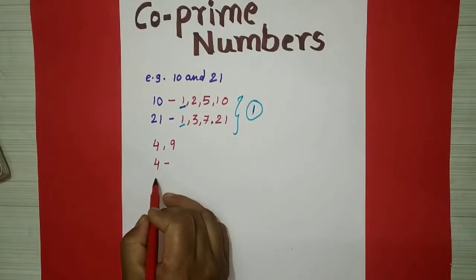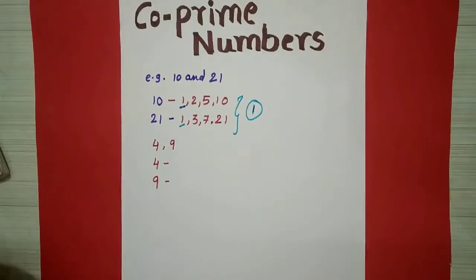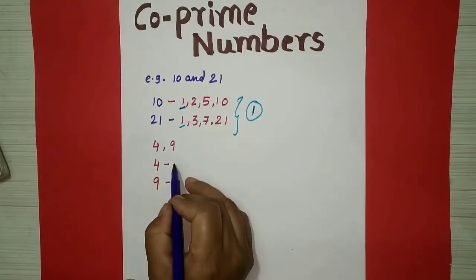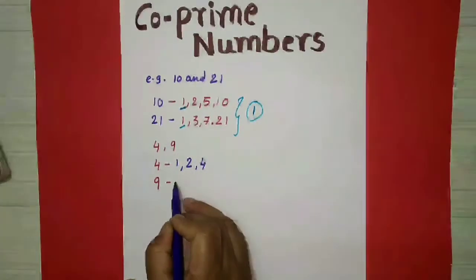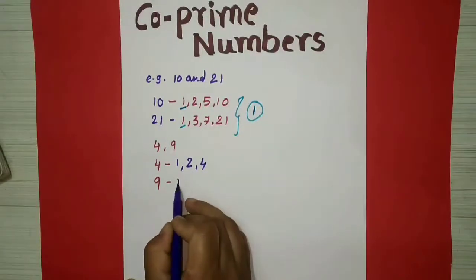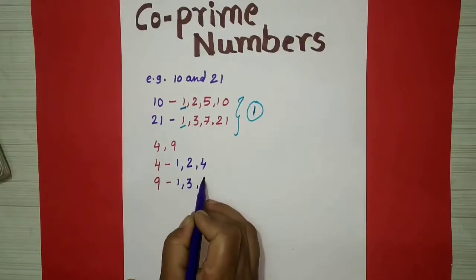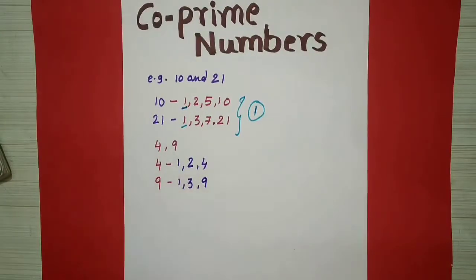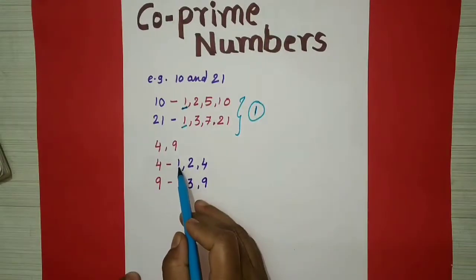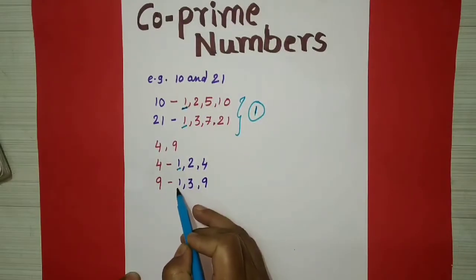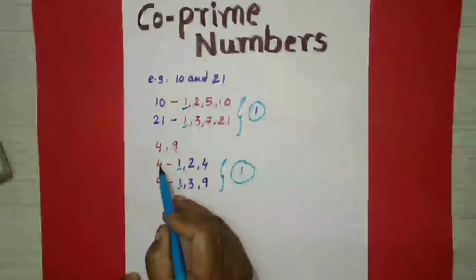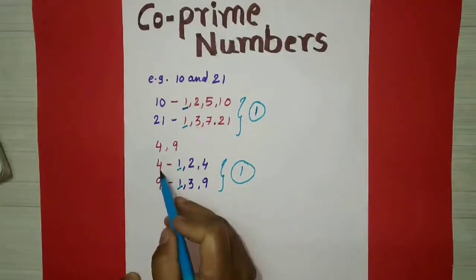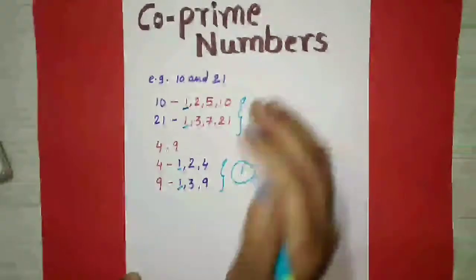Divisors of 4 are 1, 2, and 4. And divisors of 9 are 1, 3, and 9. Here also we can see the common divisor is 1. So these two, 4 and 9, are both co-prime numbers.